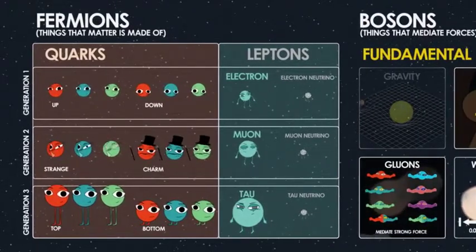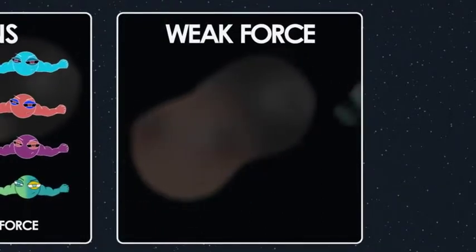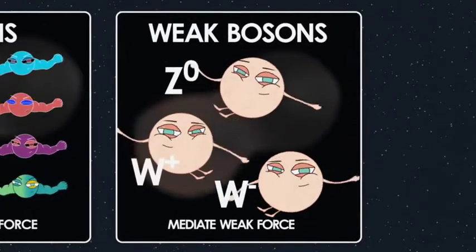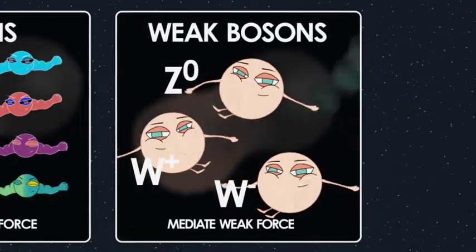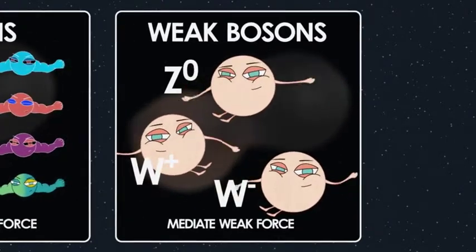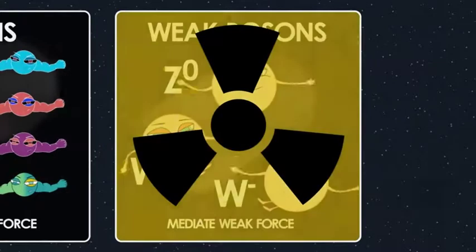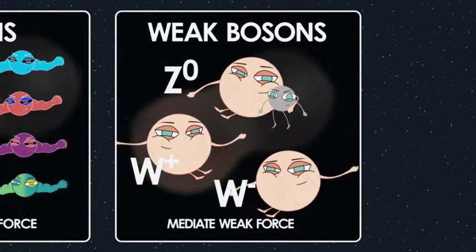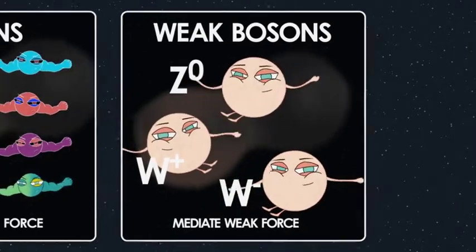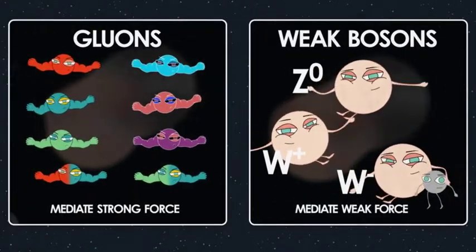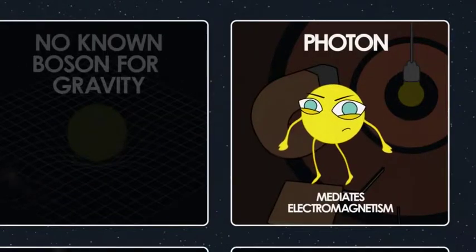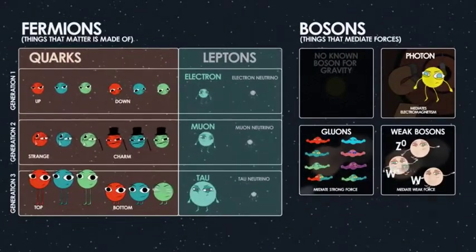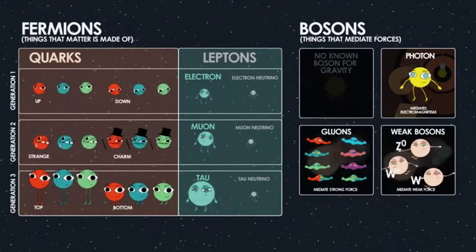The weak nuclear force is carried by three particles: the Z-naught and the W-plus and W-minus. The weak nuclear force is responsible for certain kinds of particle decay and is the only force that neutrinos feel, except for very weak gravity. So there are three bosons for the weak force, eight for the strong force, and one for electromagnetism — that's 12 bosons total. Plus the six leptons.